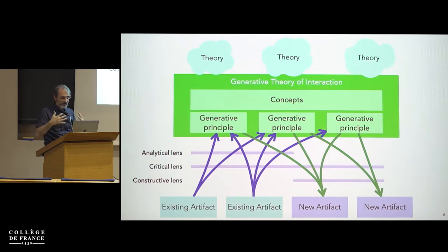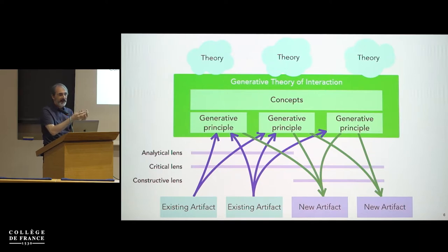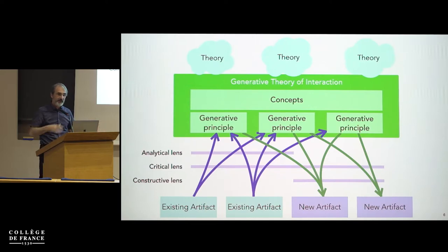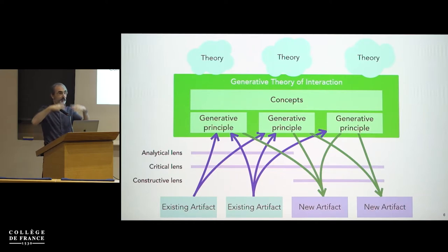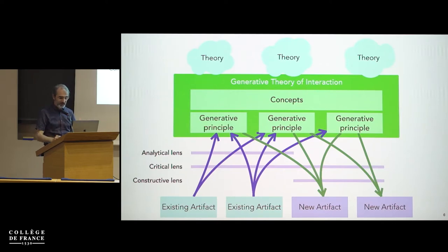The concept of generative theory is quite powerful, because it's often difficult to find how to apply a particular theory. We call for the community to create more of these generative theories. In the paper we give three examples from our respective work. Wendy has talked about co-adaptation as another generative theory, with principles like discoverability, expressivity, and appropriability. But we should have more of these theories. The history of theories is that some survive, some disappear, some merge, some get developed — and we need the same thing in HCI.